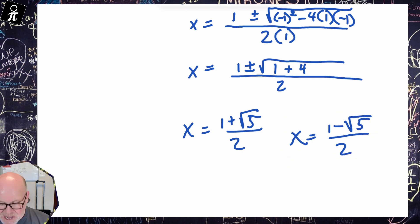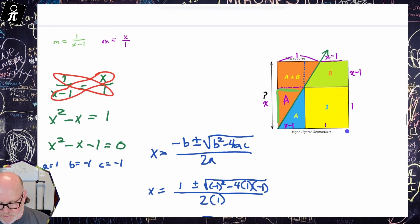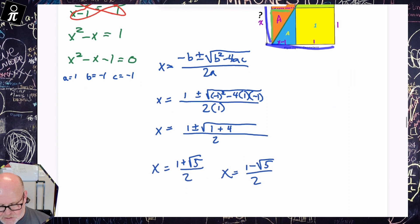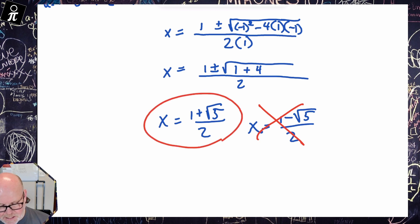All right, well we can't have this one. That's against the law, so to speak, because that would give us a negative answer, and we know our length can't be a negative length. So we definitely know it cannot be this guy. It means our X value has to be one plus the square root of five over two.